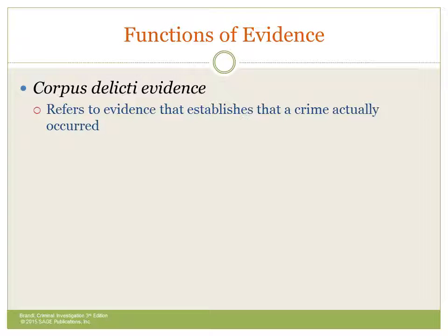Corpus Delicti evidence establishes that a crime actually occurred. So somebody calls up and says, hey, my house was burglarized. These are the items that were taken. You get there and you look around, and the items that they claim were taken aren't there. That shows that the reported crime actually occurred. And when you find that stolen merchandise in the possession of a crook later on, that's also Corpus Delicti evidence.